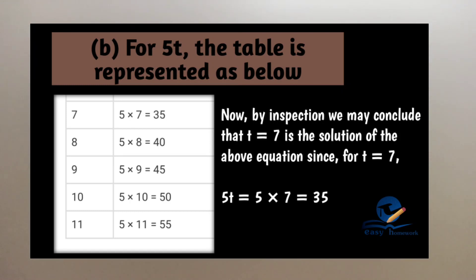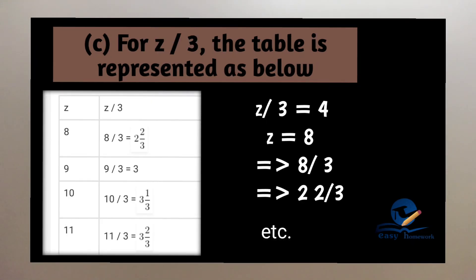Next question: Complete the table and find the solution of the equation Z by 3 is equal to 4 using the table. Now, here are two rows. Z values are 8, 9, 10, 11, 12, 13, 14, 15. We will complete the values of Z by 3 for each Z value.